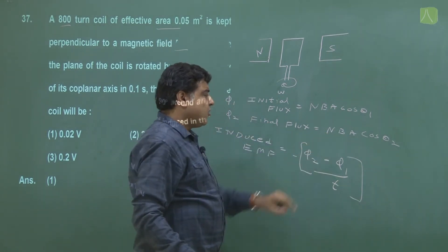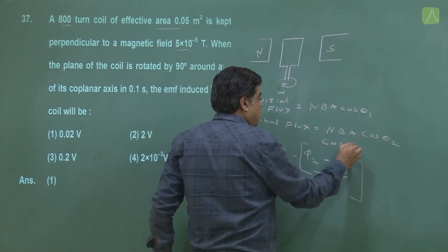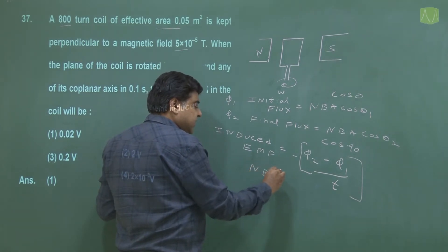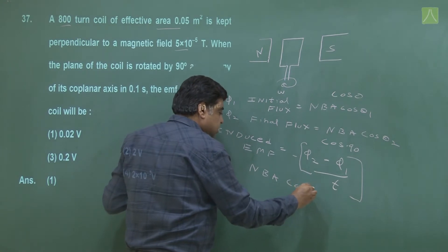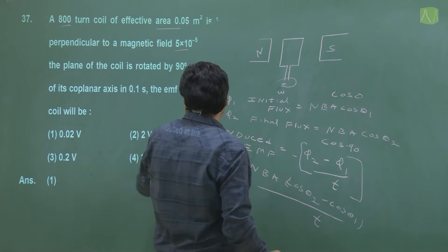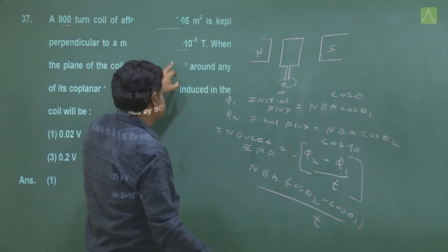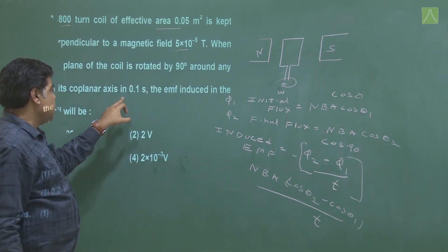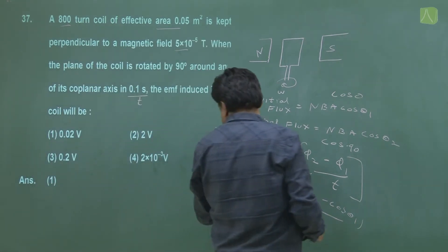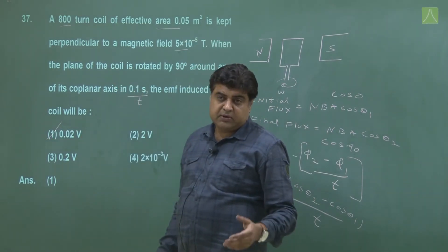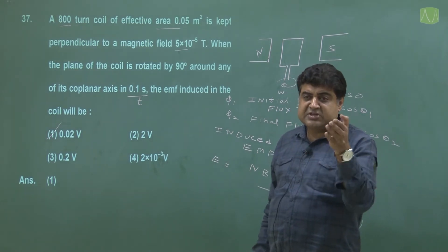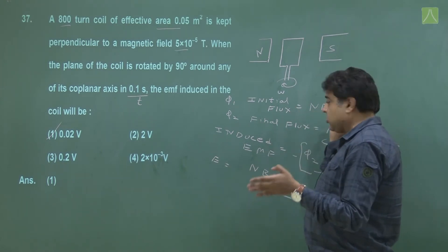cos(θ₂) = cos(90°) = 0 and cos(θ₁) = cos(0°) = 1. Putting values: N = 800, B = 5×10⁻⁵, time = 0.1 s. Solving gives induced EMF = 0.02 volt. This was an easy question on Lenz's law. The formula is NBAcos(θ), and rotating the coil 90° gives the change in flux divided by time.